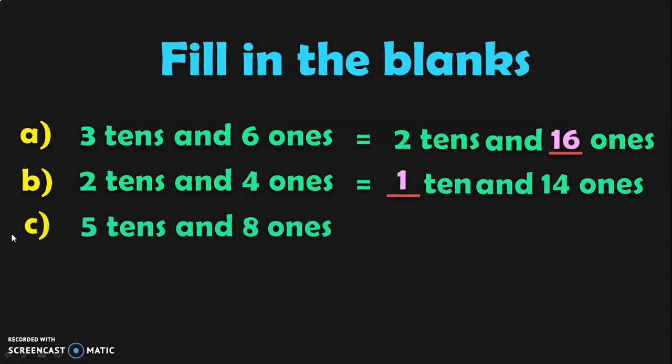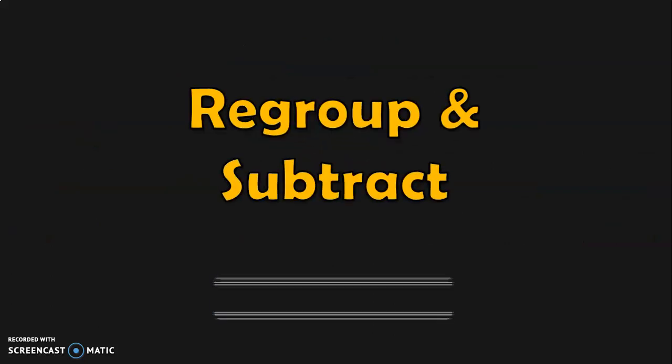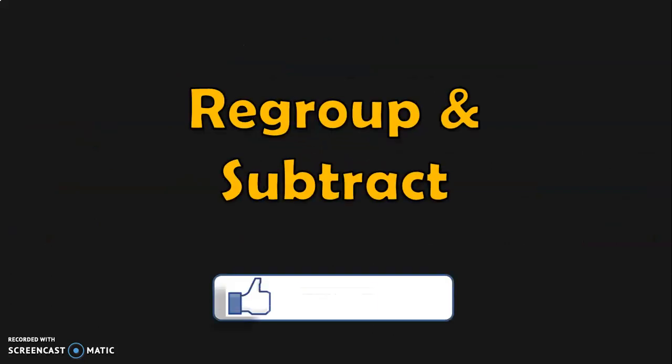Five tens and eight ones is equal to how many tens and how many ones? You can regroup five tens as four tens, and you take that one ten, or the ten ones, to the ones place. So now in the ones place you will have eighteen ones. Hope this concept is very clear to you. Now we can move to the topic of regrouping and subtracting.